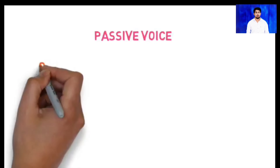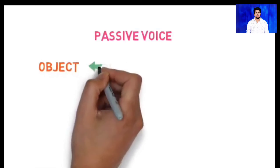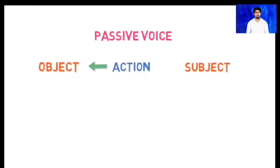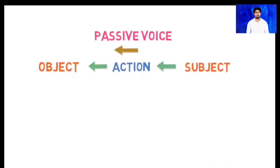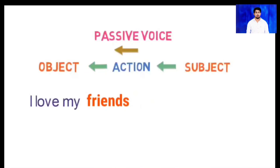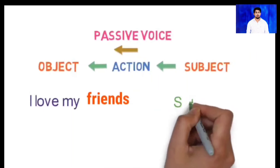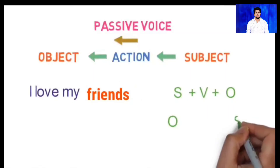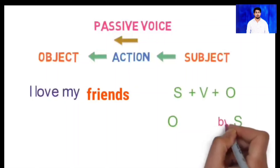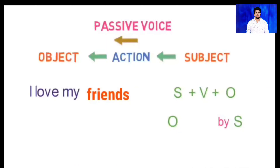Now let's learn about passive voice. Passive voice gives more importance to the object or the person experiencing the action, rather than the person performing it — the order is reversed. Using the same example 'I love my friends': here 'I' is the subject and the structure is Subject + Verb + Object. In passive voice, the object takes the place of the subject and the subject takes the place of the object.